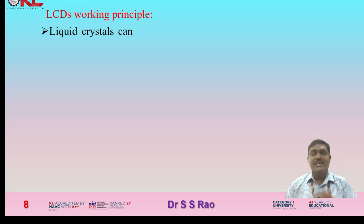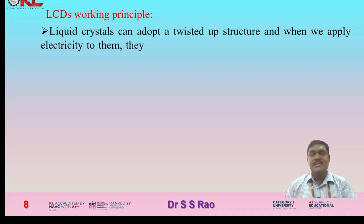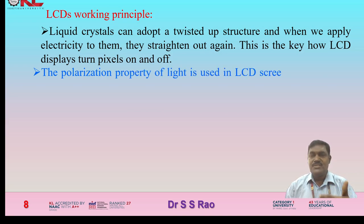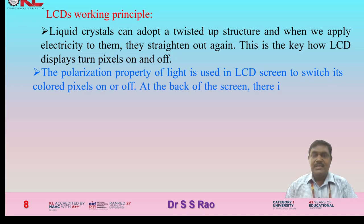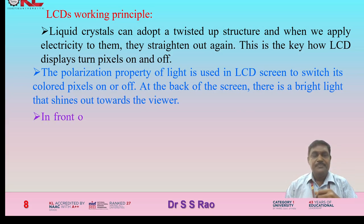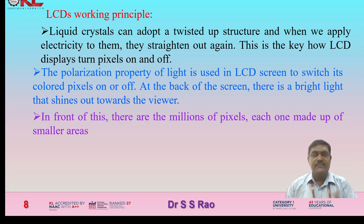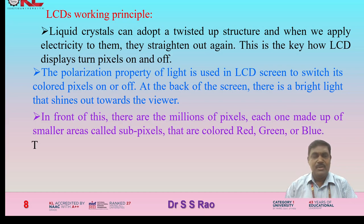Liquid crystals can adopt a twisted structure, and when electricity is applied to them, they straighten out again. This is the key mechanism by which LCD displays turn pixels on and off. The polarization property of light is used in LCD screens to switch colored pixels on and off. At the back of the screen, a bright backlight shines toward a mirror. In front of this are millions of pixels, each made up of smaller sub-pixels colored red, green, or blue.